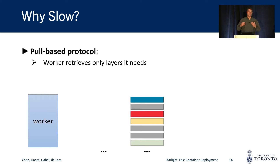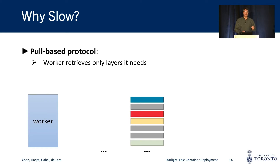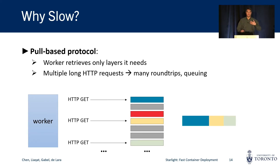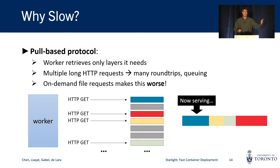So why is container provisioning slow on the edge? The first reason is, perhaps counter-intuitively, the pull-based design used by current approaches. When we deploy a container to a worker, the worker will only request the compressed layers that it doesn't already have in local storage, which makes perfect sense. However, on the edge, bandwidth is limited and round-trip times are high. The result of these multiple requests is queuing. Many HTTP requests are queued in the registry because registry servers typically serve many clients and limit the number of concurrent connections. Approaches like eStarGZ that download individual files on demand make the problem even worse because they increase the number of requests.